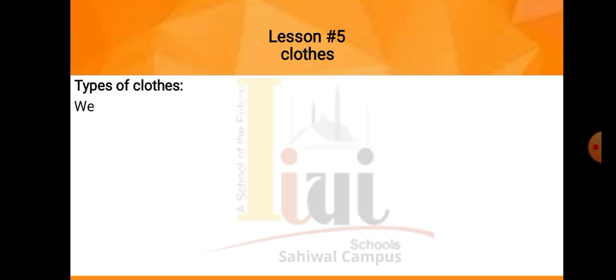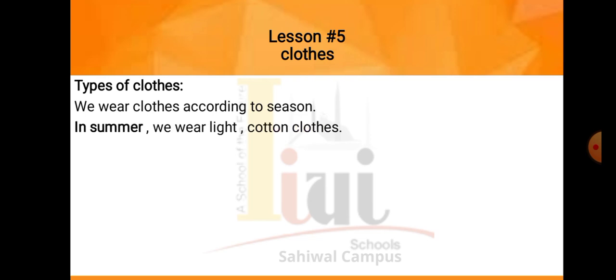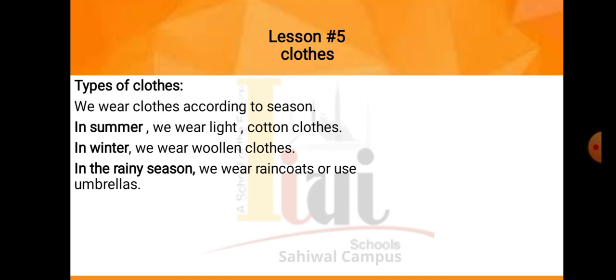Next is types of cloth. We wear clothes according to season. In summer, we wear light cotton cloths. Hum apni clothing jo hai wo season ke lihaz se carry kertay hai — summer season mein hum log light, wear lightweight stuff, like cotton cloths ya lawn cloths. In winter we wear woolen cloths, winter mein hum log wool ke cloths pahantay hai, taake hum log cold ko prevent kar sakain. In the rainy season, we wear raincoats or use umbrellas. These are made of waterproof material, jo paani ko absorb nahi kertay.